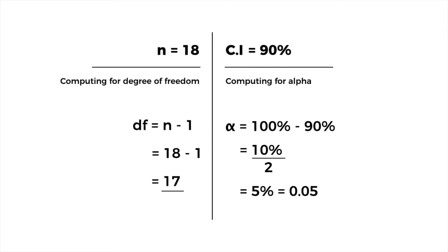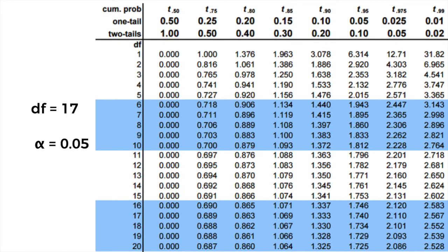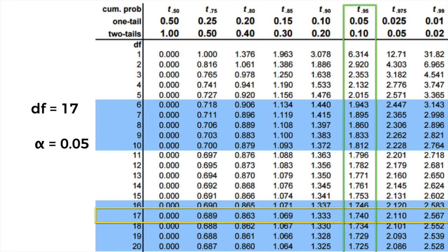We now locate this value in the T-distribution table. The first column shows degrees of freedom and the rows show different alpha values. Since we divided alpha by 2, we are looking at one tail, so the alpha for one tail is 0.05. Looking at where degrees of freedom 17 and alpha 0.05 intersect, the T value is 1.740.